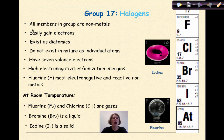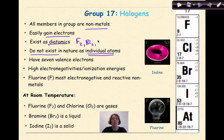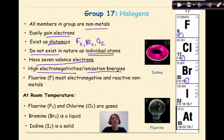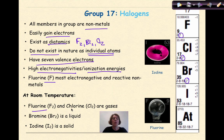Now we're at Group 17, the halogens. All members in this group are non-metals. They easily gain electrons and exist as diatomics — they do not exist in nature as individual atoms. These are represented as F2, Br2, Cl2, and so on. They have seven valence electrons, high electronegativities, and high ionization energies. Fluorine is the most electronegative and reactive non-metal on the periodic table. At room temperature, fluorine and chlorine are gases, bromine is a liquid, and iodine is a solid. Don't assume all elements in Group 17 are gases — they are not.